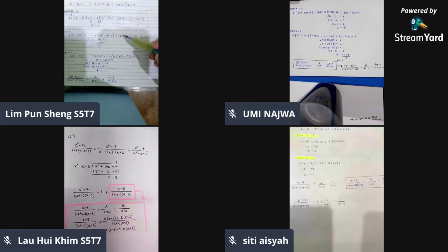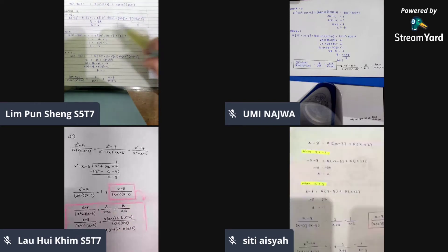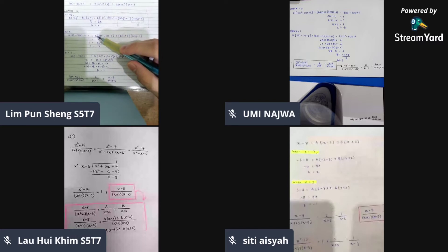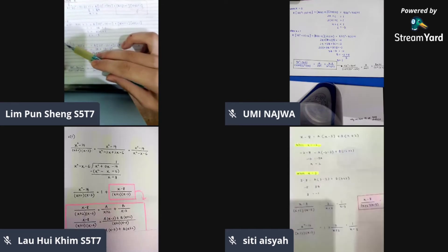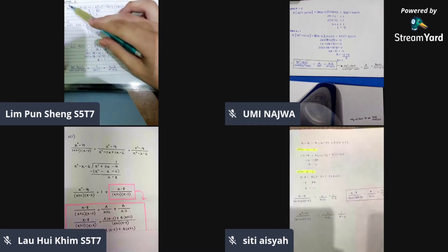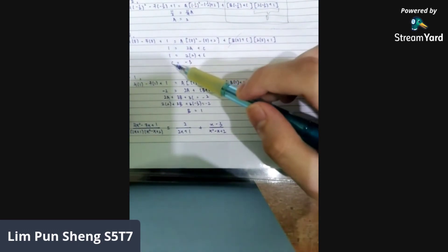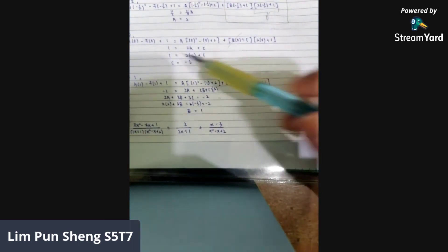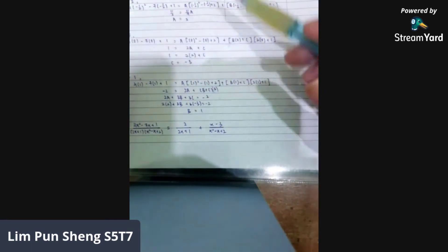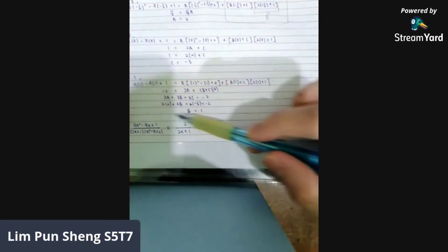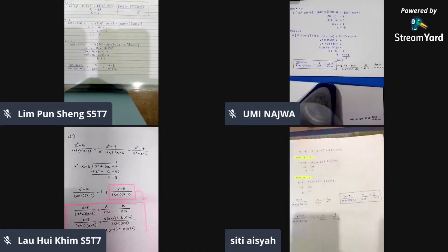We use x equals 0 because b multiplied by 0 cancels out b, leaving only one unknown — and we already have the value of a. As for x equals 1, we can actually use any value for the third substitution, except negative 1 over 2 and 0. We avoid those because substituting them would cancel out b, but at this stage we need to find b. Since we already have a and c, any other value works. Does that answer your question, Aisha? Yes, I got it. Thank you.